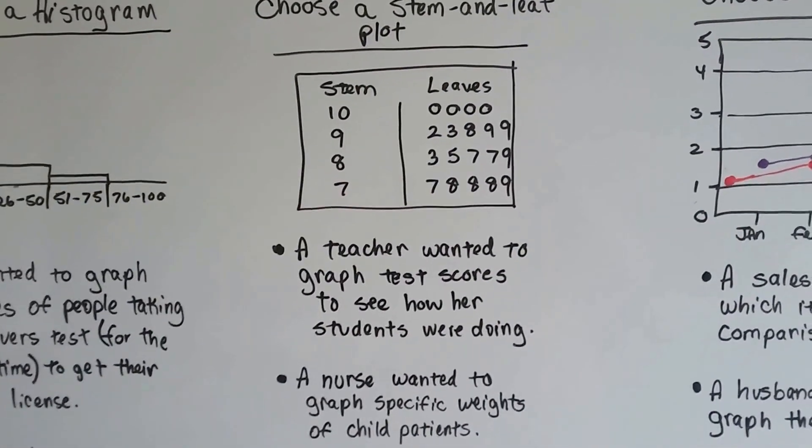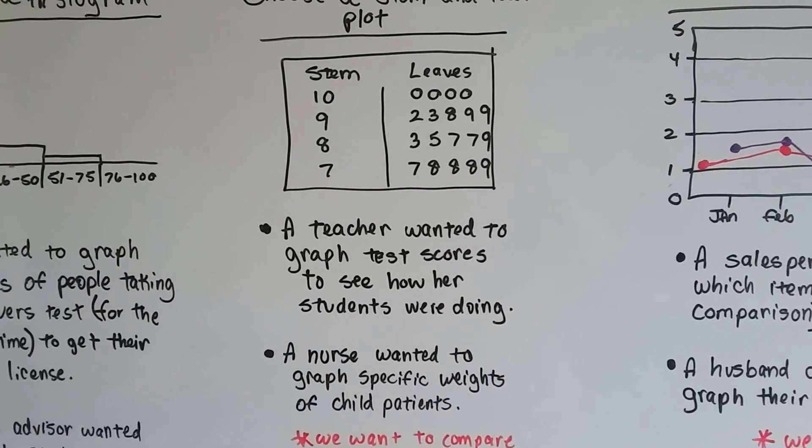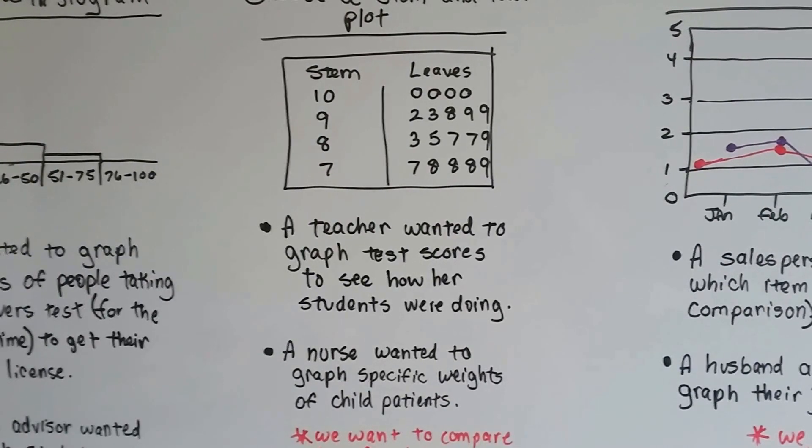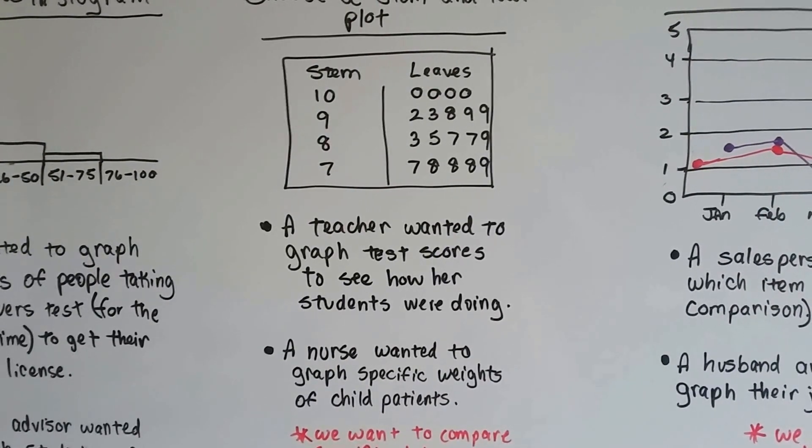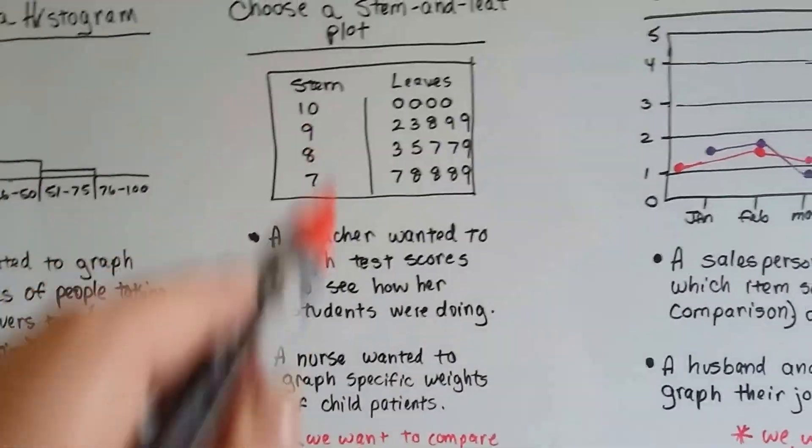A stem and leaf plot is good when you want to compare specific data like a teacher wanted to graph test scores to see how her students were doing or a nurse wanted to graph specific weights of child patients to see how their weights were compared to each other. That's comparing specific data.